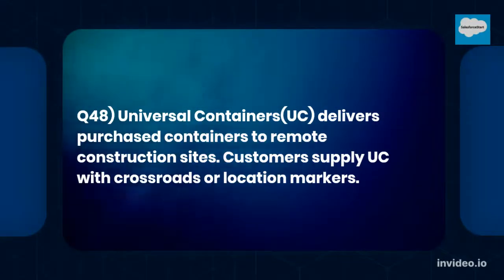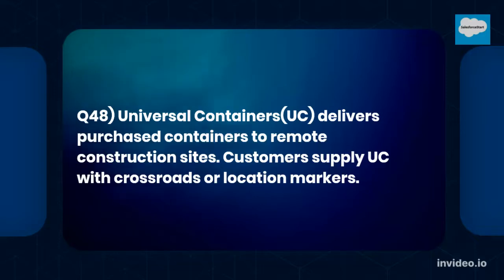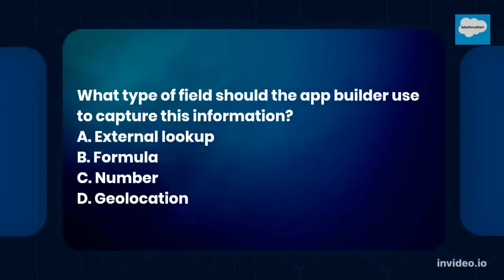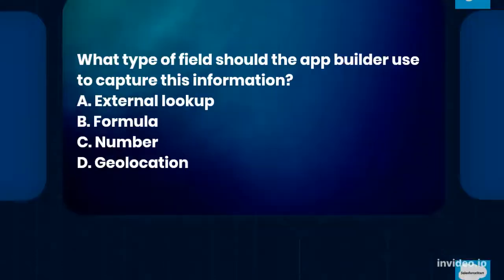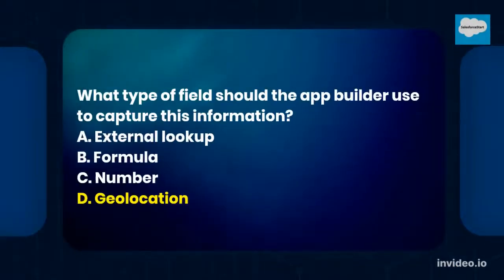Question number 48: Universal Containers (UC) delivers purchased containers to remote construction sites. Customers supply UC with coordinates or location markers. What type of field should the app builder use to capture this information? A. External lookup. B. Formula. C. Number. D. Geolocation. The answer is option D: Geolocation.